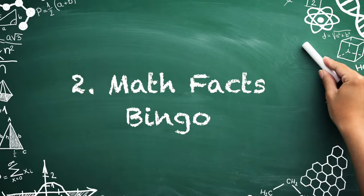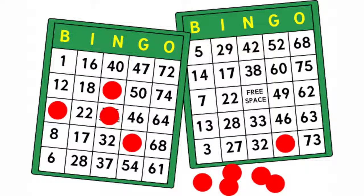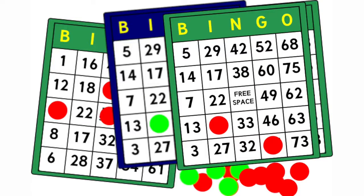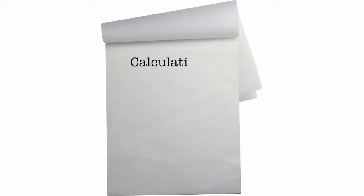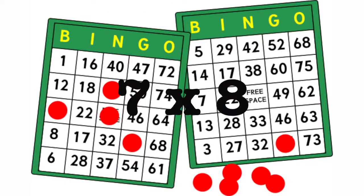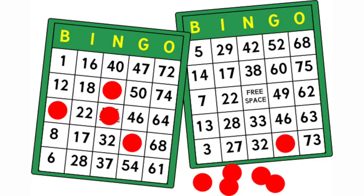Number two: math facts bingo. Make fact fluency drills engaging by playing this version of bingo. First, create bingo cards that contain answers to different multiplication tables. Second, hand them out to students and make sure they have a separate sheet for calculations. Finally, instead of calling numbers, state equations such as seven times eight. After determining the product is 56, they can check off the number if it's on their cards.